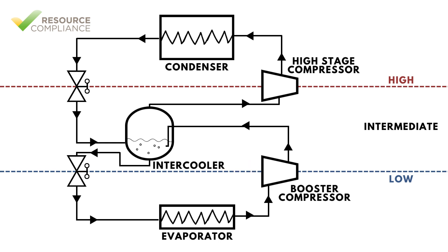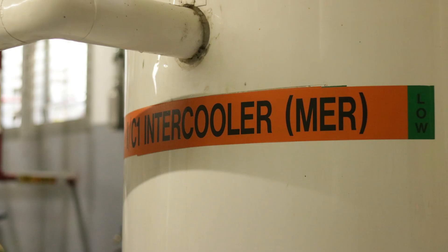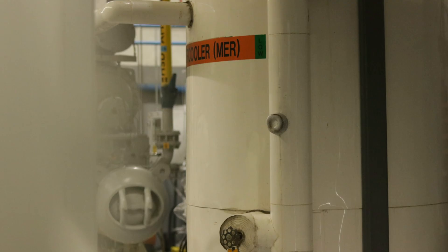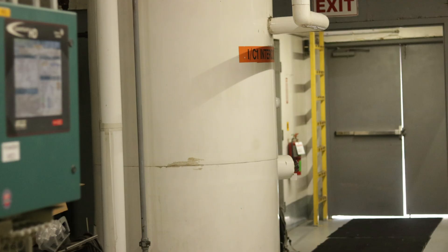Vapor exiting the booster compressor is piped to a vessel called an intercooler. The intercooler maintains a level of intermediate pressure liquid that the booster discharge gas percolates through. This de-superheats the booster discharge gas so that the vapor exiting the top of the intercooler, while at the same pressure, is a much lower temperature.